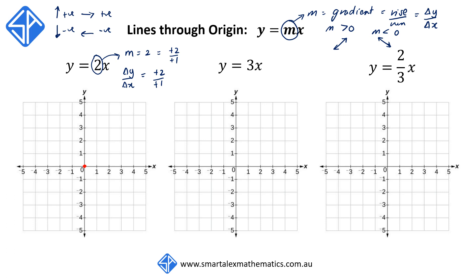So starting off at the origin — our first point on the line — we're going to move horizontally towards the right by one unit. That's our Δx, or our run.